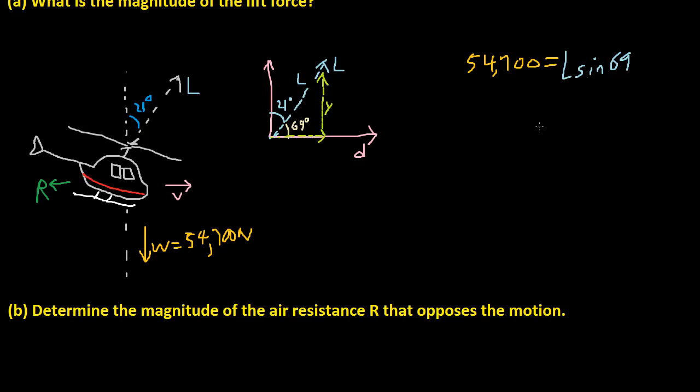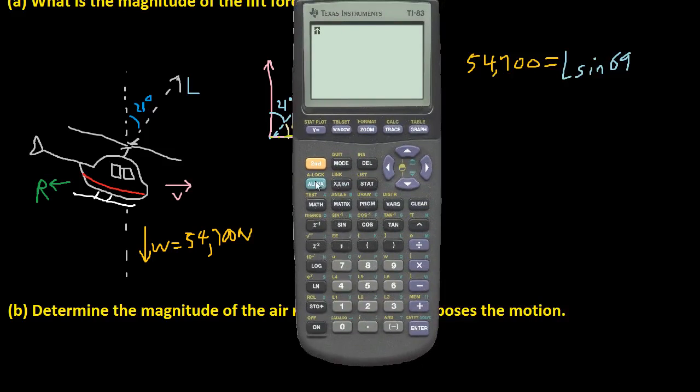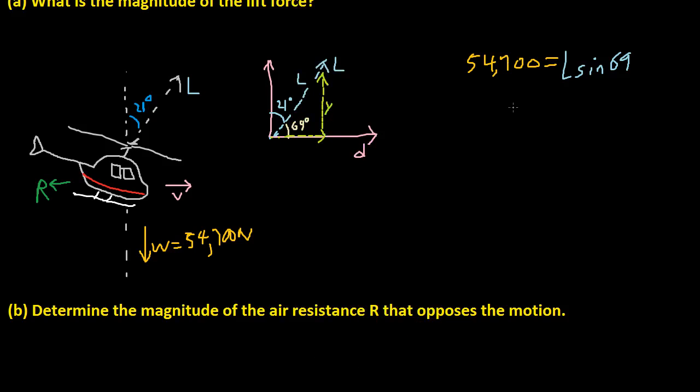We just solve for L because we're looking at the magnitude. Our calculator says 54,700 divided by sine of 69 is 58,591 newtons. So L is 58,591 newtons. That's the magnitude.